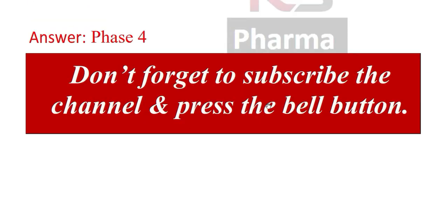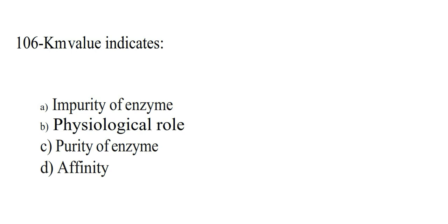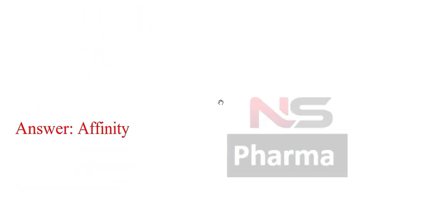Answer: Phase 4. Next question. KM value indicates: Option A. Impurity of enzyme. Option B. Physiological role. Option C. Purity of enzyme. Option D. Affinity. Answer: Affinity.